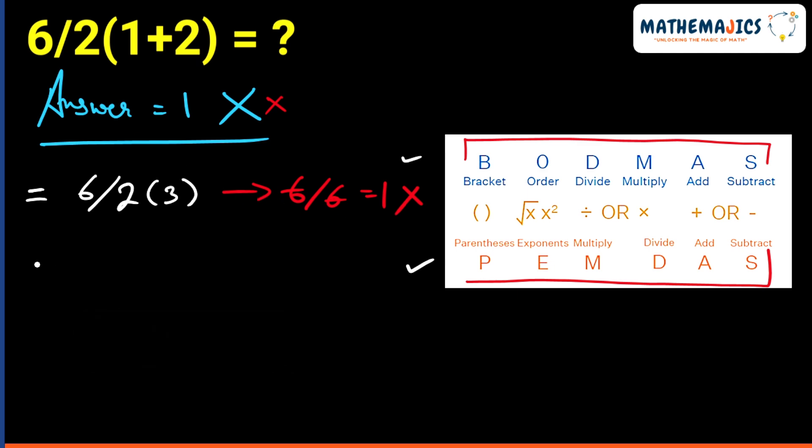Instead, what we should do is write it properly in fraction format. If we write this in fraction format, we will get 6 over 2 times 3. This bracket is multiplied with the fraction, not with 2. So if we solve this,